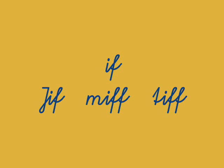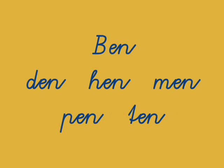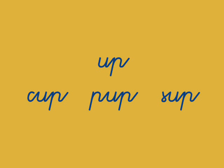Notice that myth and tiff are spelled with double Fs. What about Ben? Ben has that short vocal E sound, as in den, hen, men, pen, ten. And we have another short vocal sound — the U in up: cup, pup, sup.